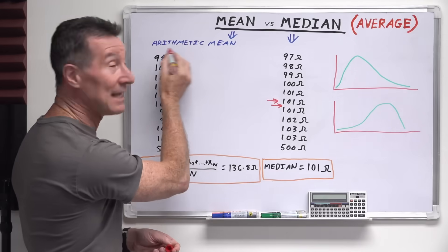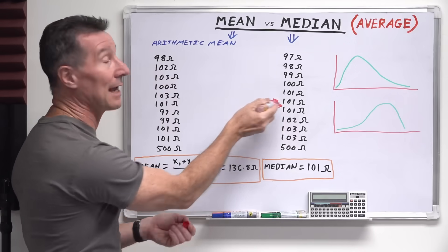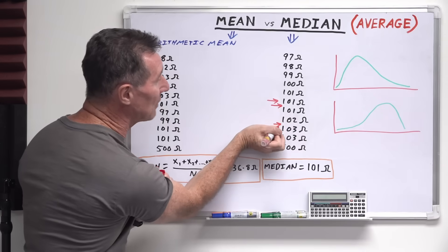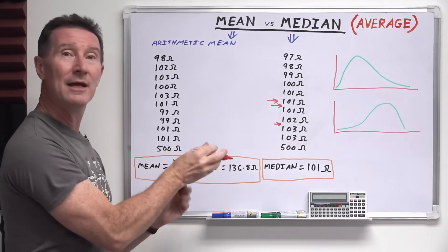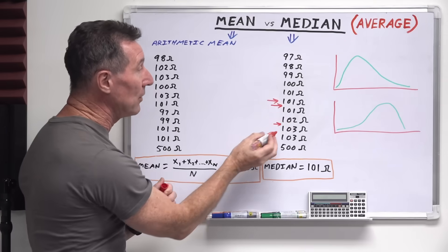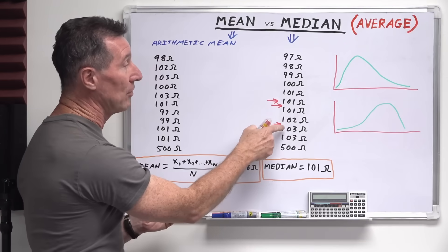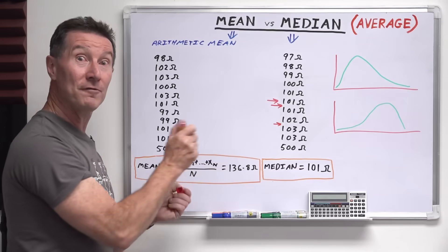Well, you simply take the arithmetic mean of those two values. In this case it's 101, but let's say it was these ones like this, 101 and 103, then your median value would be the arithmetic mean of those. So it would be 102.5.